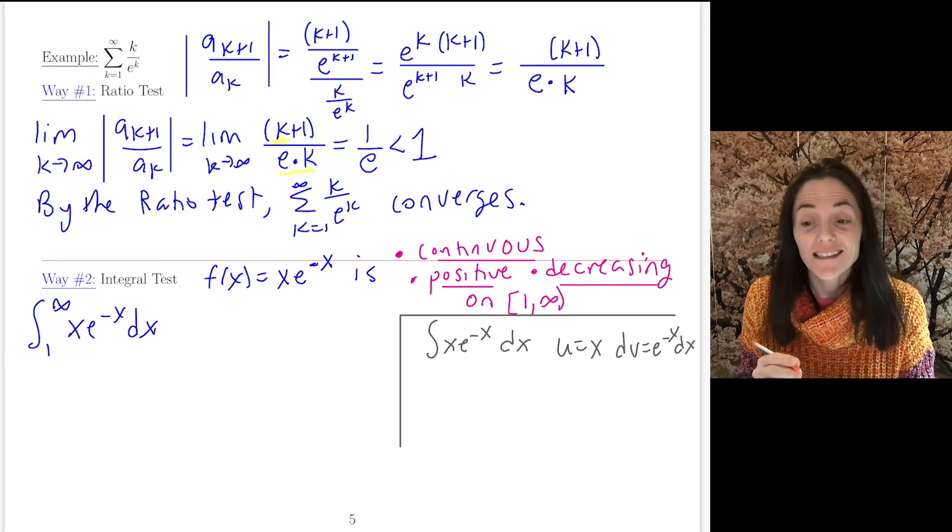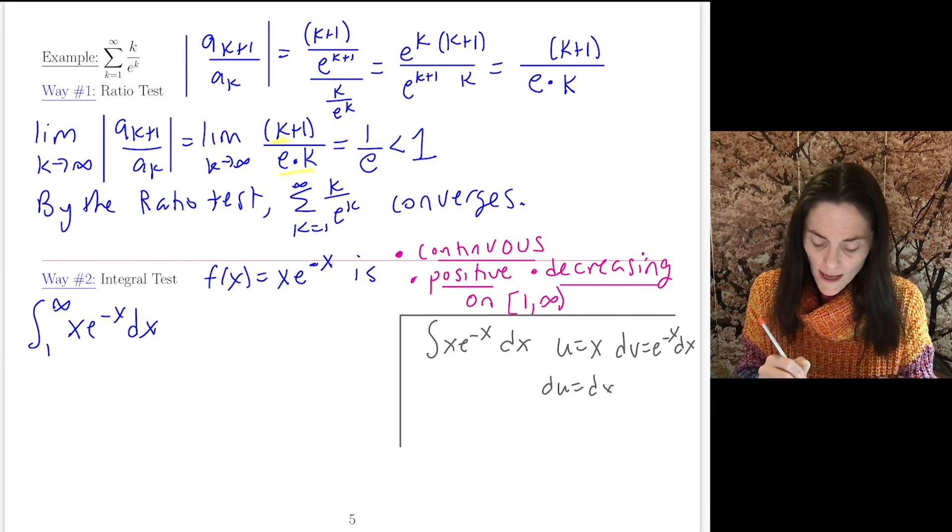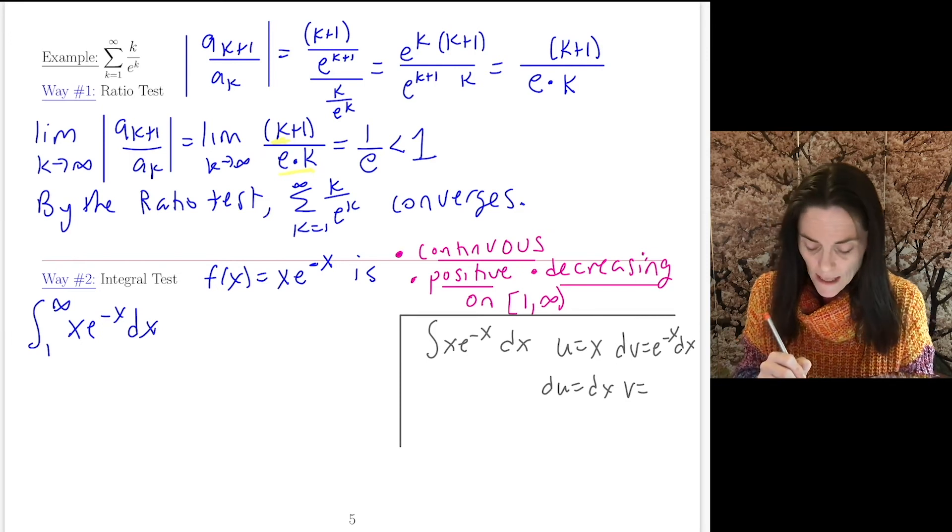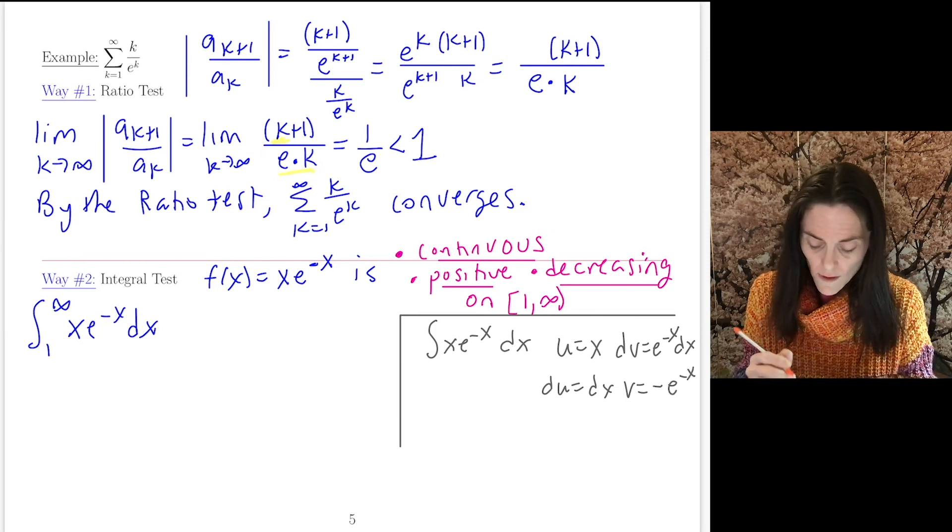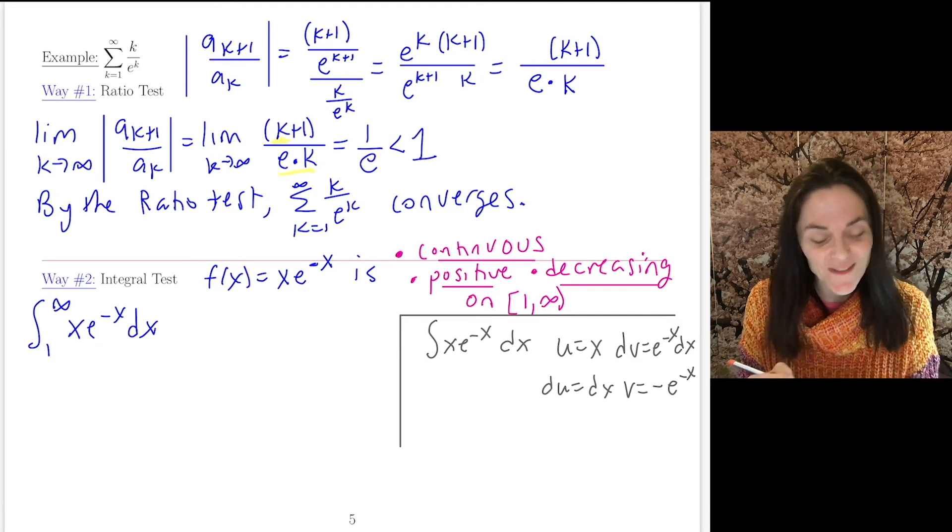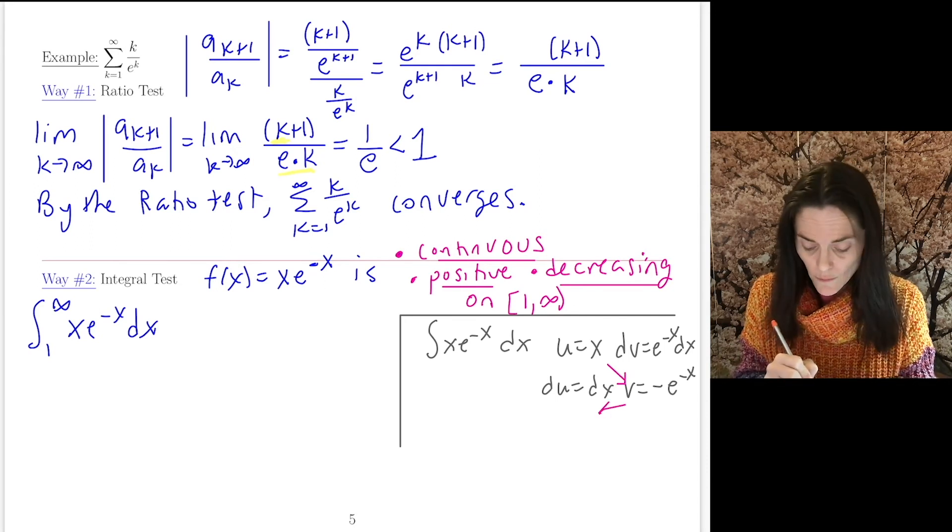And dv is everything else. e^(-x) dx. Now, differentiate. du is dx. And integrate. We get -e^(-x). Then, integration by parts. I hope you remember this from earlier in the semester. We have uv minus the integral v du.